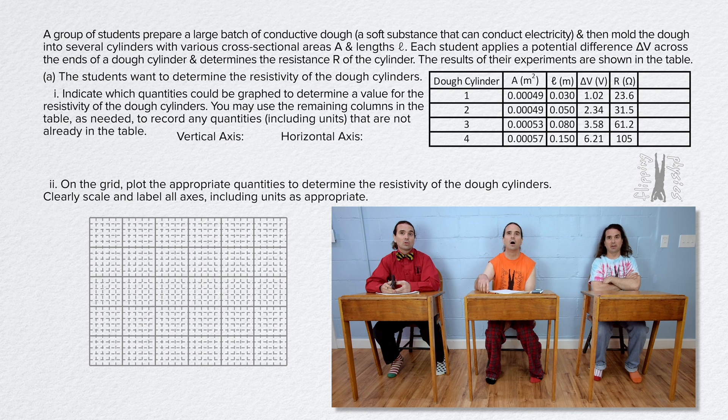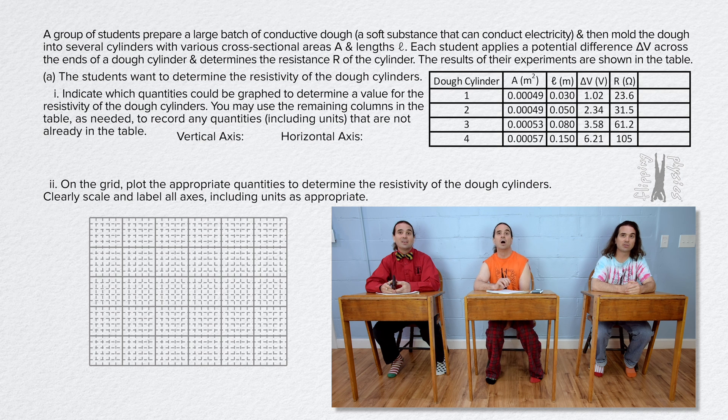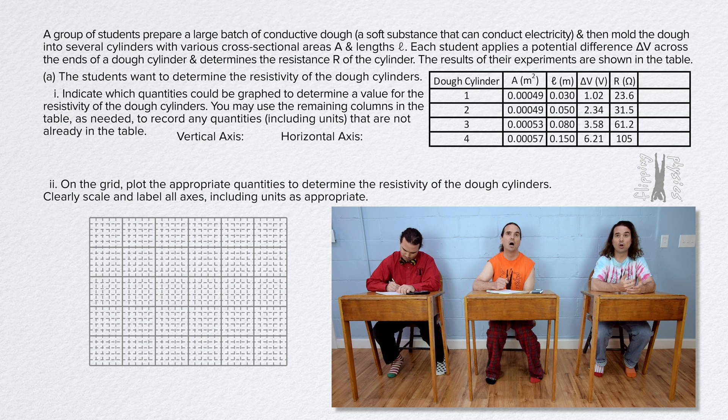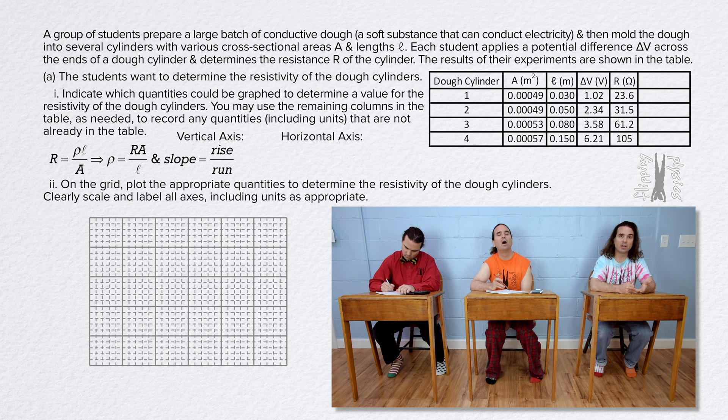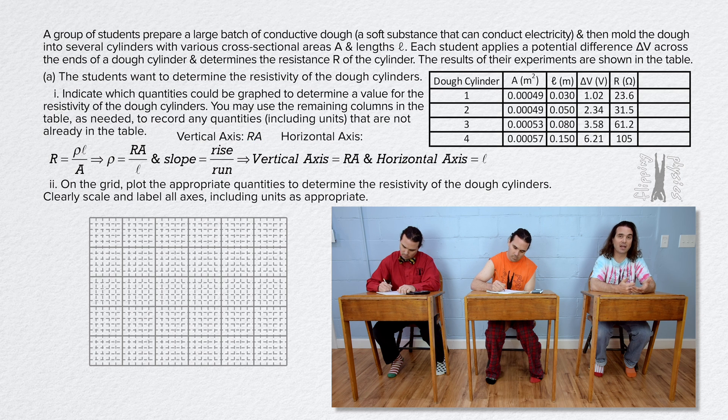Sure. We need to figure out what to put on the x and y axes of a graph so that we can use the graph to determine the resistivity of the conductive dough. Let's solve the resistance equation for resistivity and use slope to determine resistivity. So, we know resistance equals resistivity times length over cross-sectional area, therefore resistivity equals resistance times area over length. Slope equals rise over run. That means the rise or y axis or vertical axis equals resistance times area and the run or x axis or horizontal axis equals length.